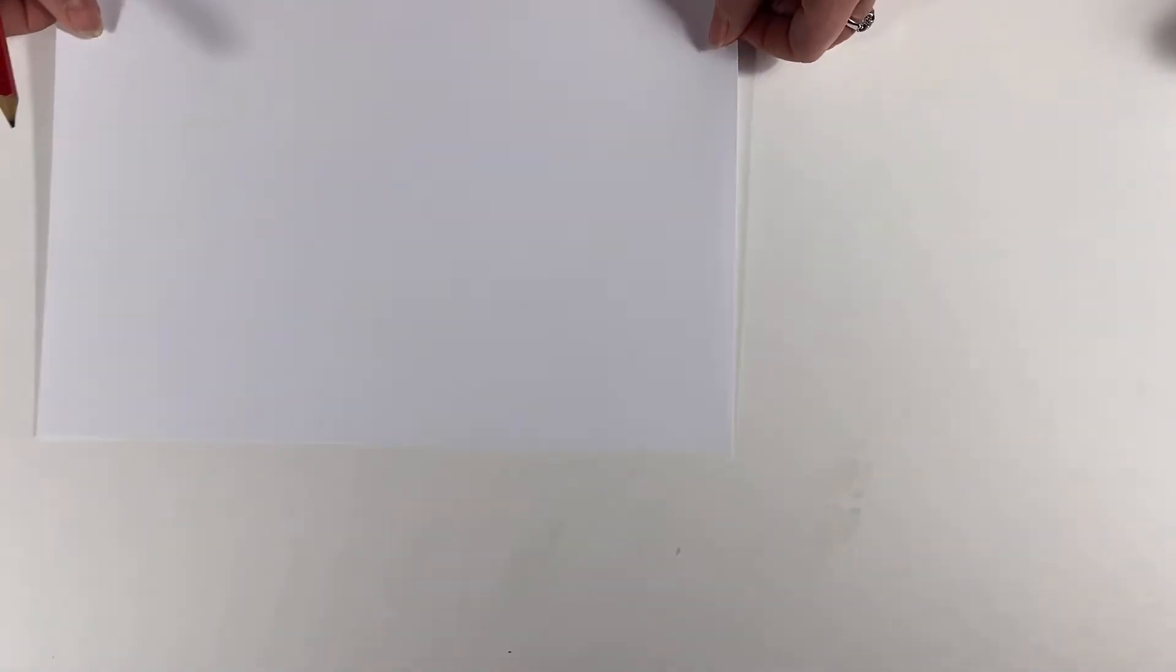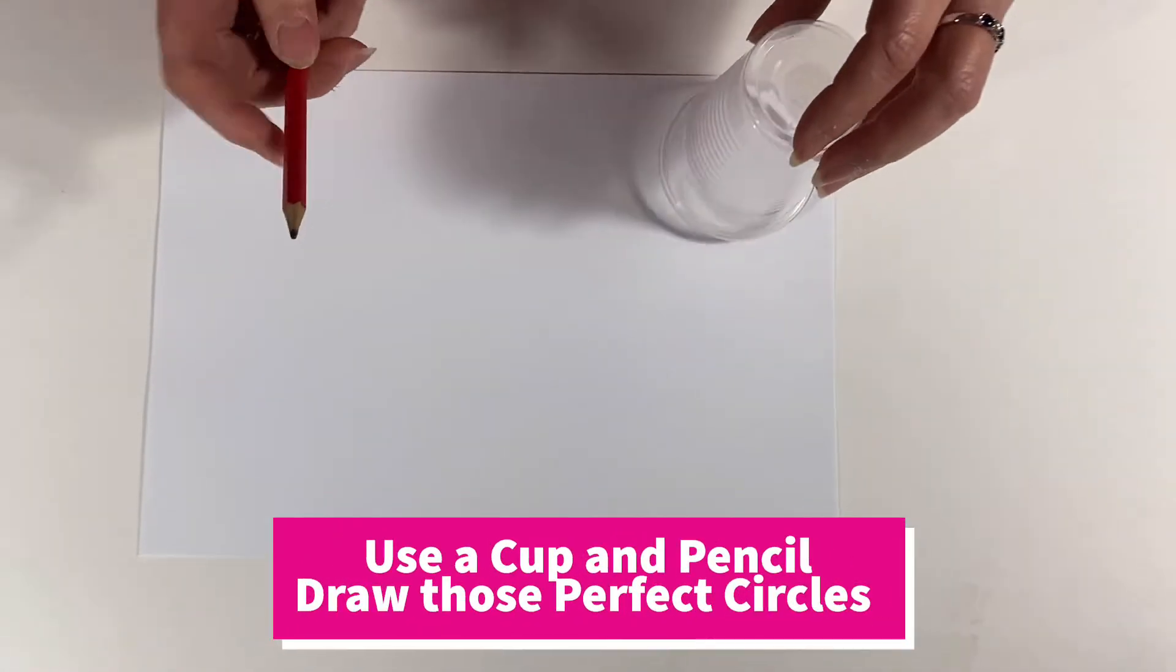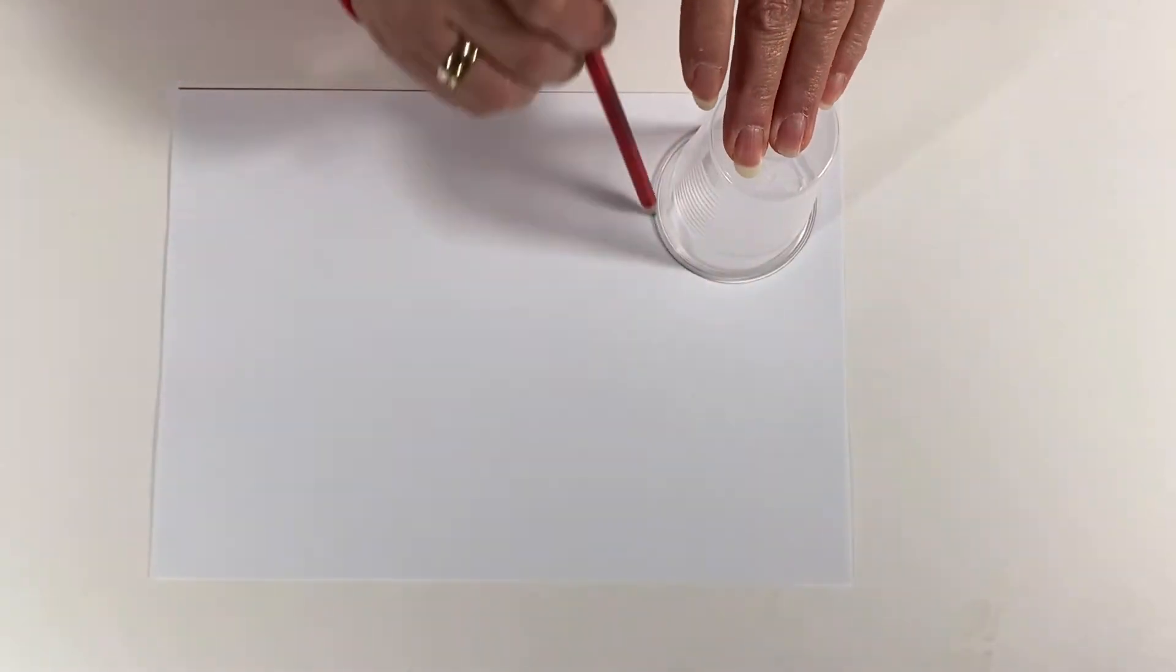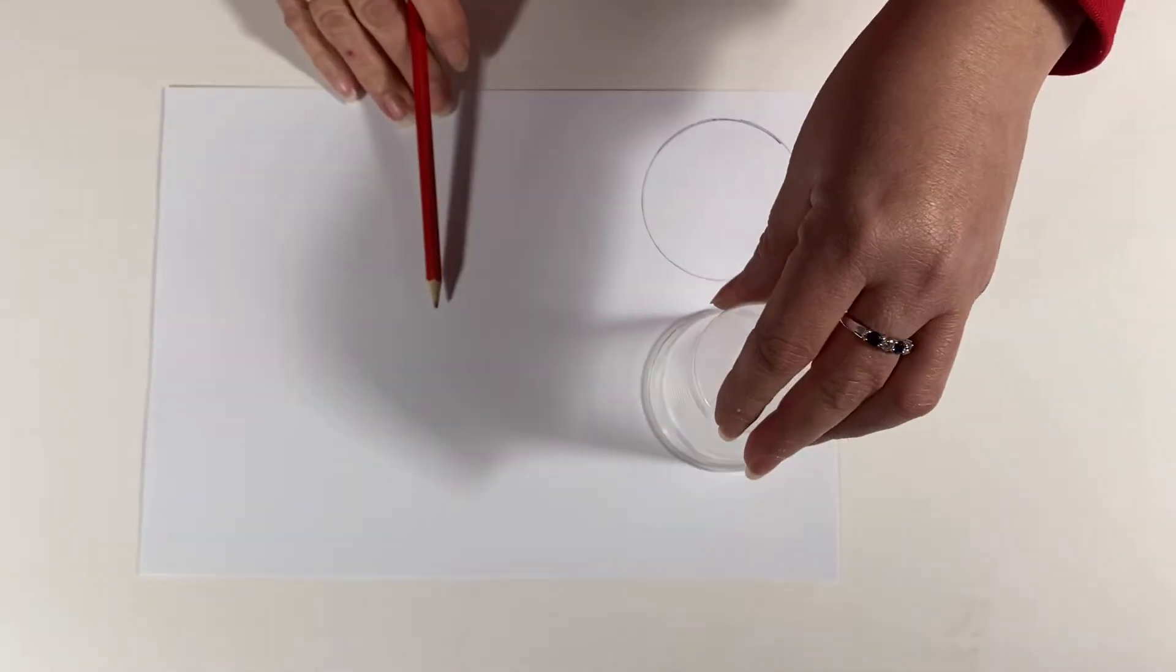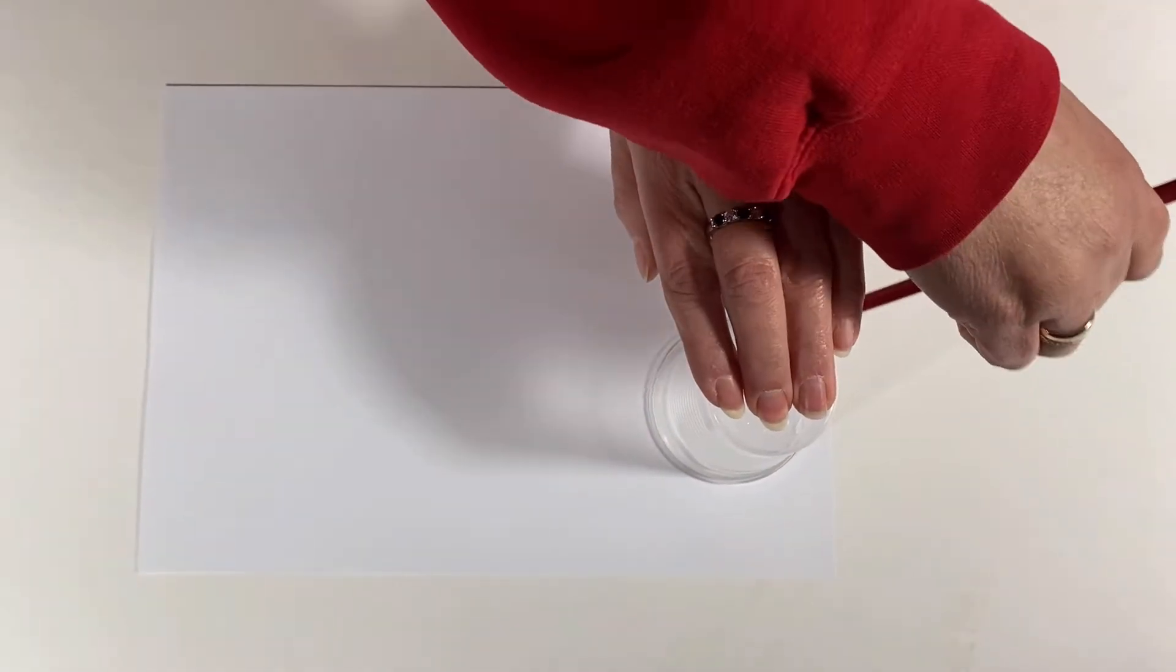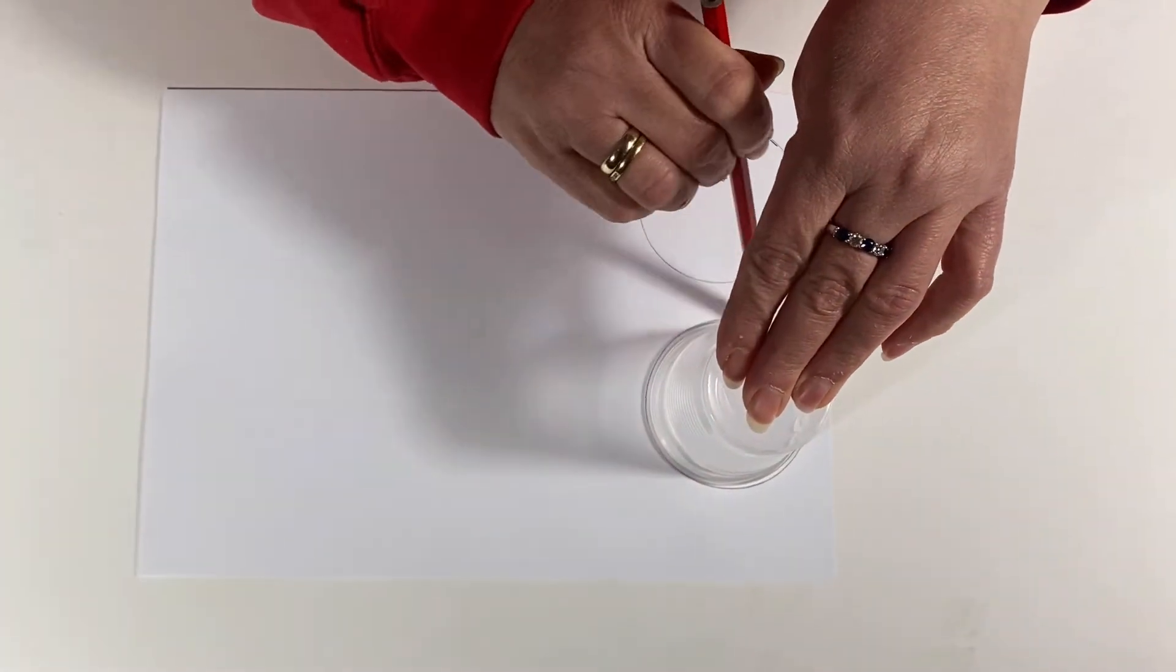To do our own, we're going to have a white card and a cup. I'm going to draw circles around the cup. You might need somebody to help you hold them down because later on we'll be cutting them out.